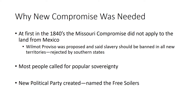An idea called the Wilmot Proviso was proposed, stating that slavery should be banned in all new territories. Obviously, this would be rejected by the southern states, as they felt they would soon be outnumbered in Congress when it comes to representatives. Many people at this time instead called for popular sovereignty, which would enable people living in the territory to decide if their state would become free or slave.